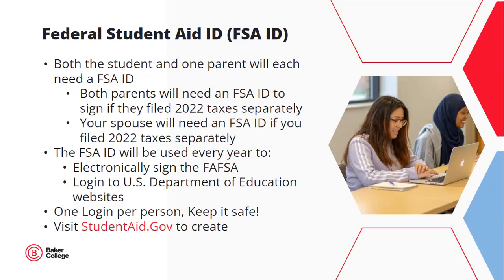Please keep in mind that the FSA ID is the signature associated with the person's information used to create the ID — do not create the ID for someone else. Students should create their own ID and a parent will create a separate ID for themselves. Provide answers to the verification questions in case you ever forget your FSA ID. When submitting, make sure you correctly enter your social security number, name, and date of birth — these must match what's on your social security card. If one of these data elements doesn't match, the ID becomes invalidated. Each FSA ID must also have a unique email address; do not use a temporary email such as your high school or college email address.